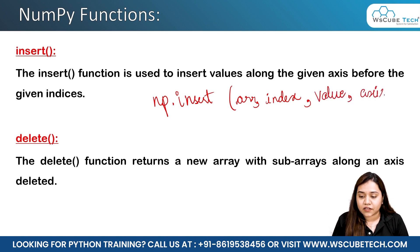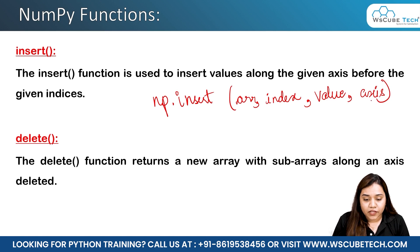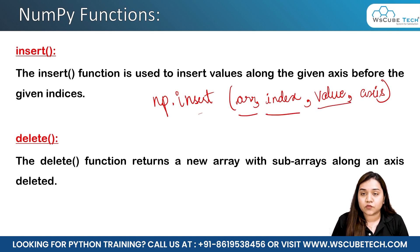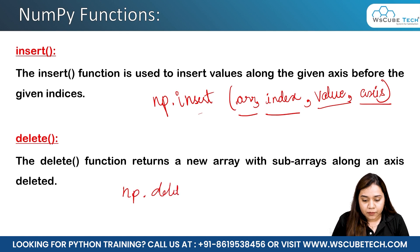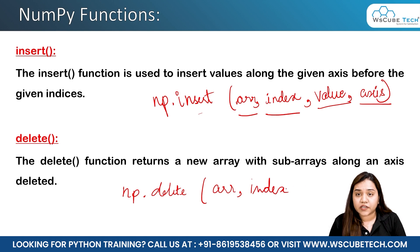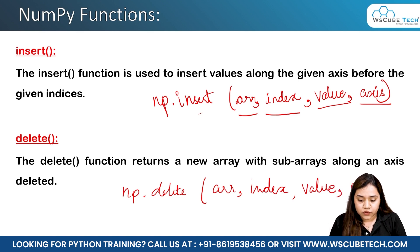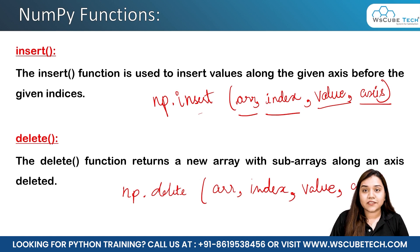The axis parameter comes into picture when we have two-dimensional or three-dimensional arrays. So we have four parameters: which array we are working on, the index at which we want to add, what value we want to add, and at what axis. The same works for delete as well — we write np.delete with the array name, the index, and optionally the axis.